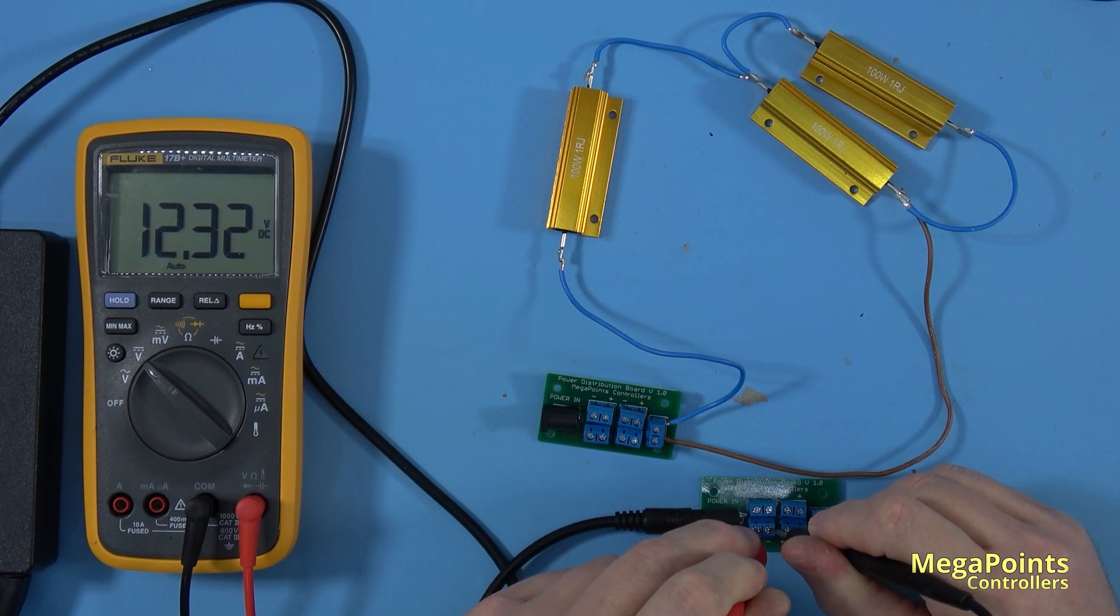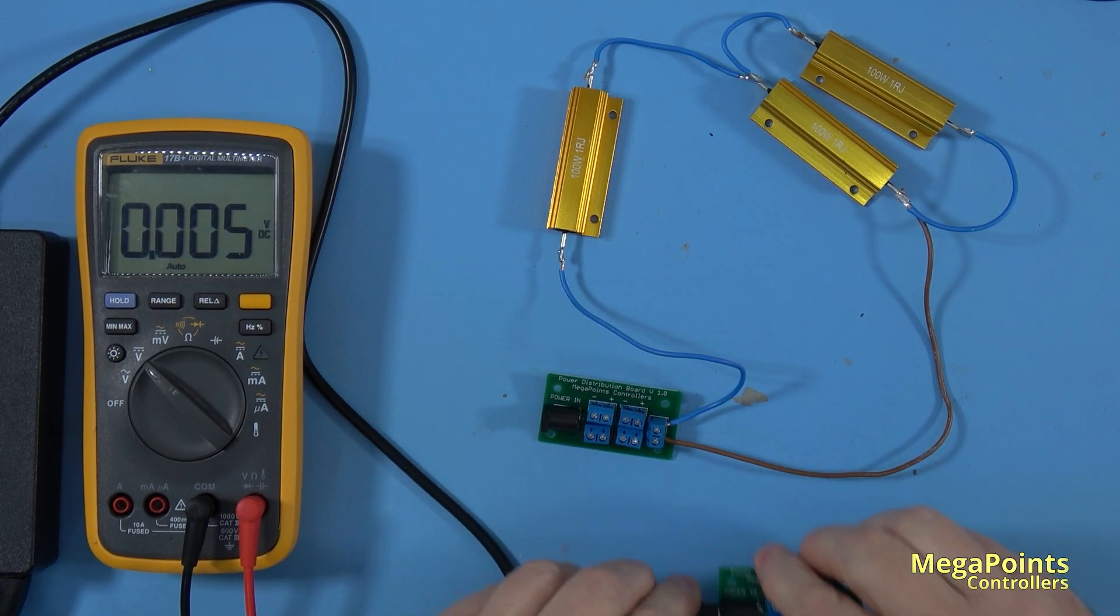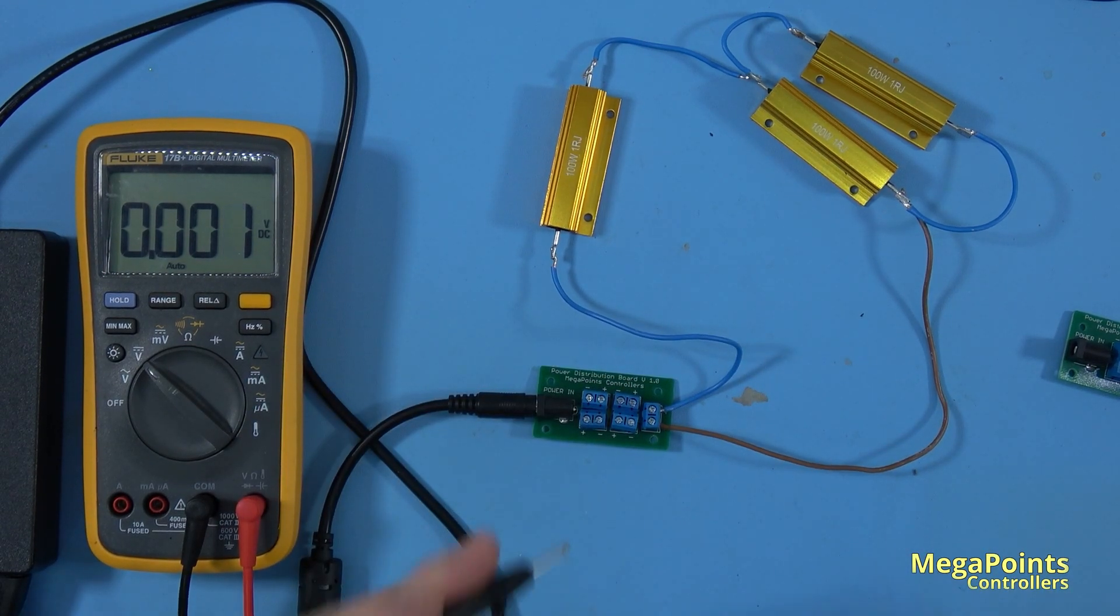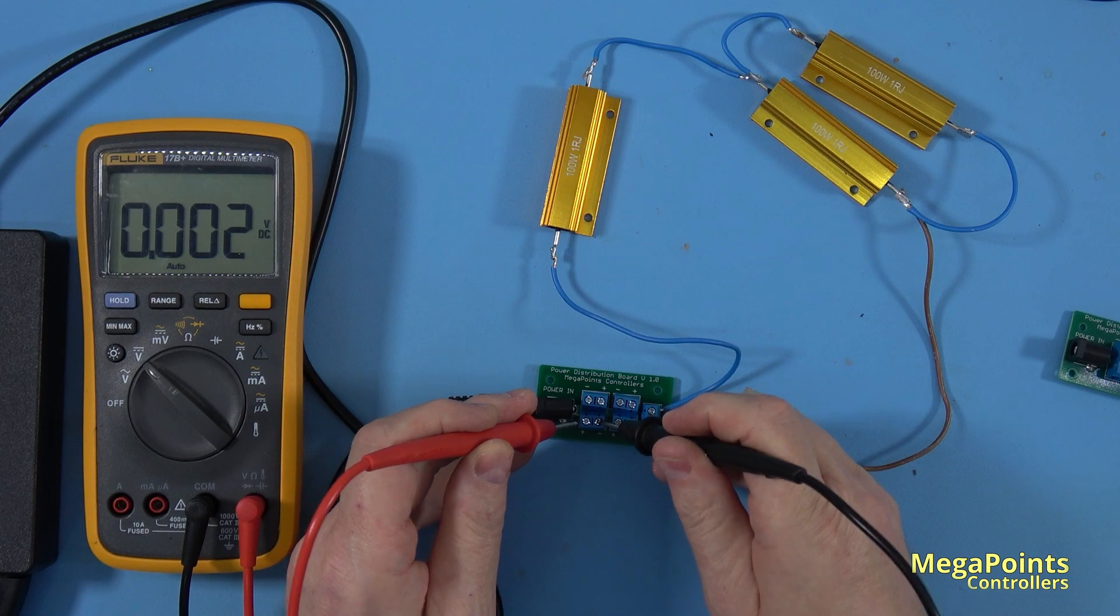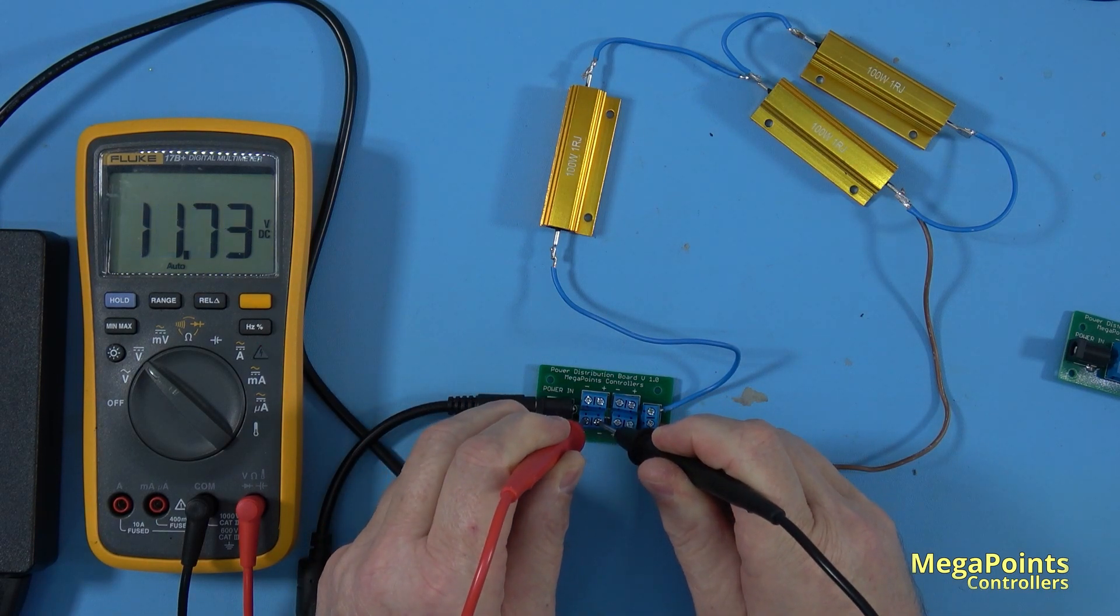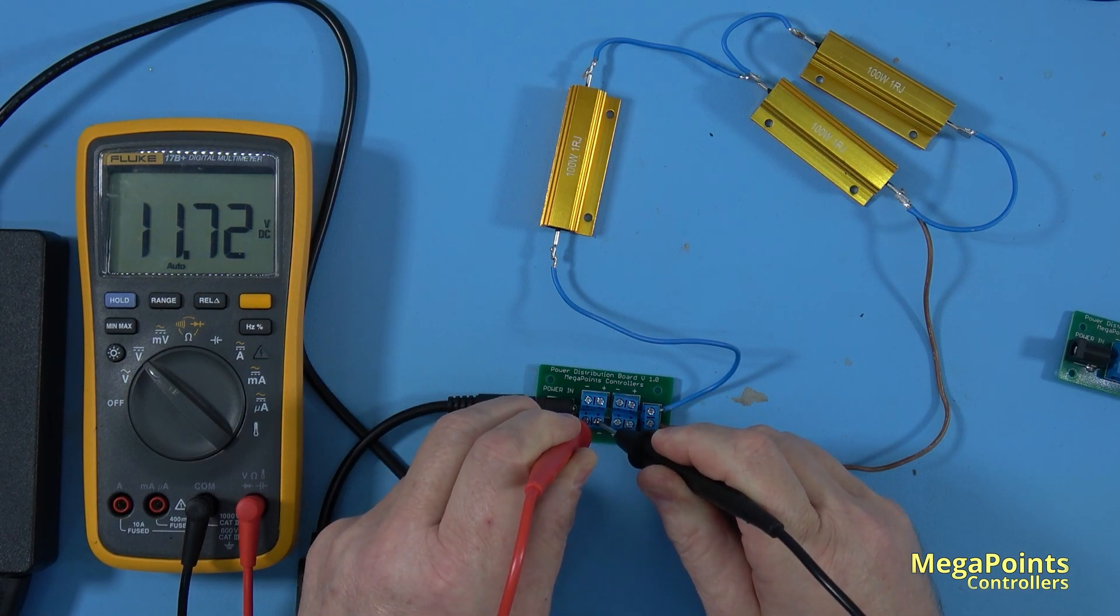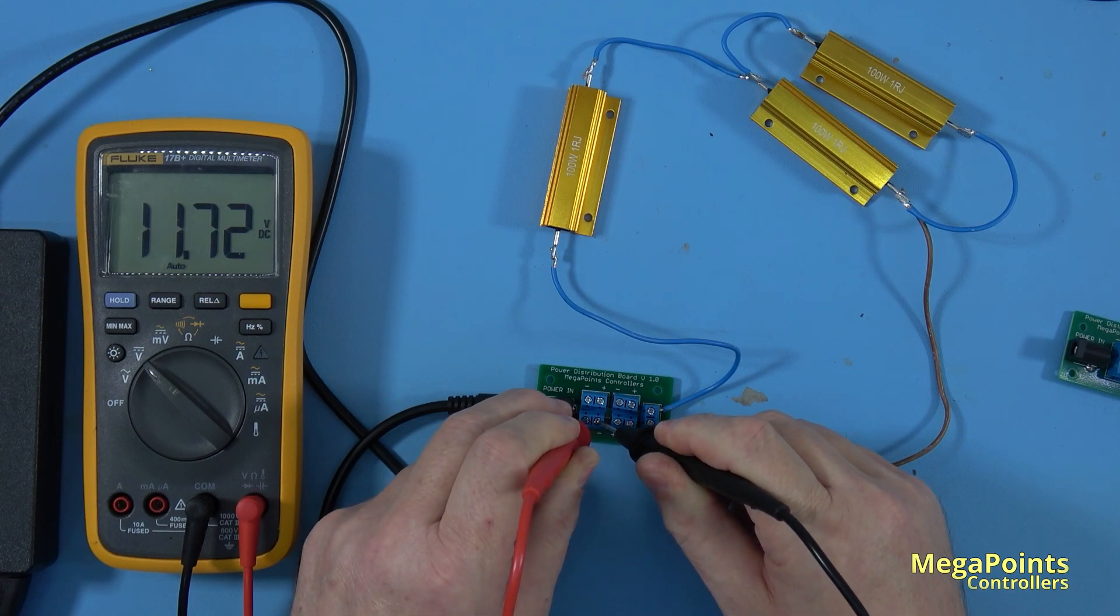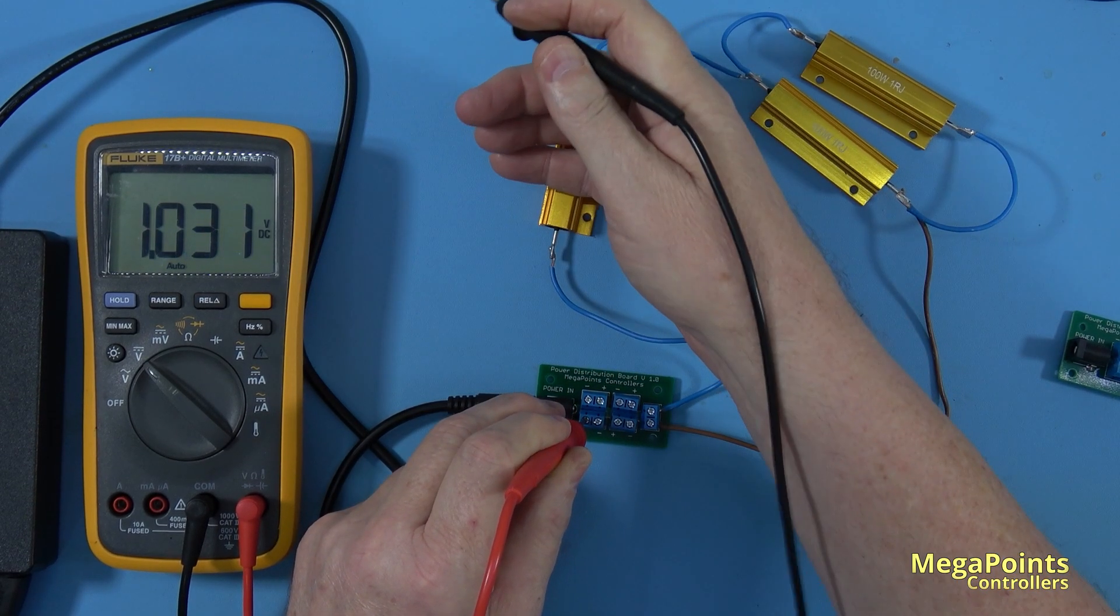If I put it on the 1.5-ohm resistor load, we're getting 11.7 volts. So it's maintaining the 12-volt vicinity under full load. Let's see what the current is.